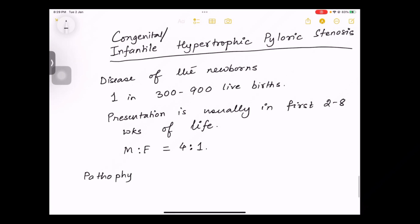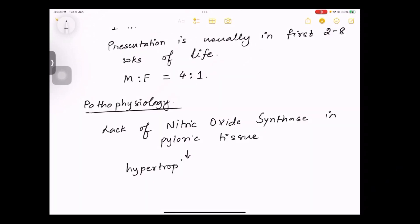Let us come to pathophysiology of congenital or infantile hypertrophic pyloric stenosis. Initially there is lack of nitric oxide synthase in pyloric tissue. This will cause hypertrophy and loss of relaxation of the circular muscles of the pylorus.